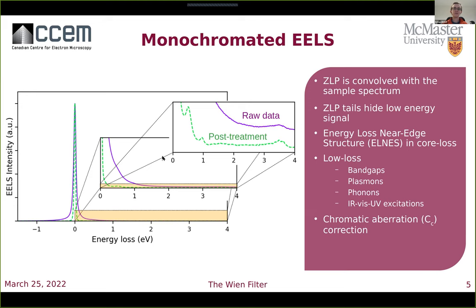In the low loss spectrum, the monochromator has a huge advantage because we're now able to study excitations down to the infrared, visible, and UV region of the spectrum, which can include excitations in the valence electron structure or atomic vibrational modes, really revealing a whole new world of excitations to study. The monochromator helps us study this region both by improving the energy resolution and by reducing the tails of the zero loss peak. Another use of the monochromator is as a chromatic aberration corrector — reducing the energy spread of your beam reduces chromatic aberration and can improve the spatial resolution of a high resolution image.